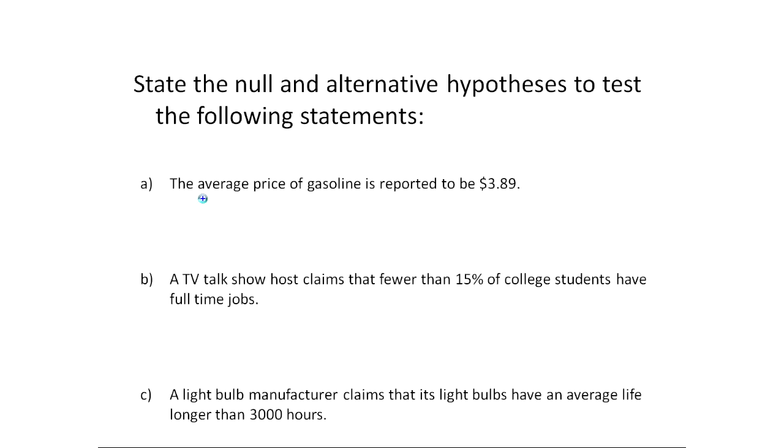In this first claim it says the average price of gasoline is reported to be $3.89. So the claim is about an average, so it's mu, that the population average is 3.89. That has an equality in it, so that's going to automatically be my H naught.